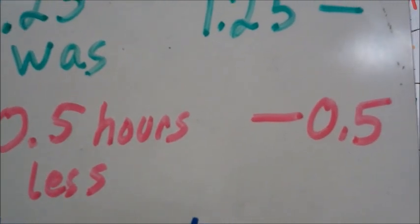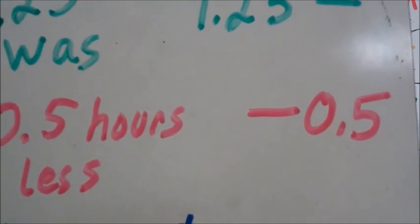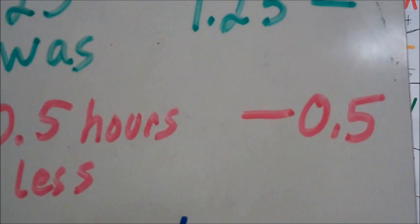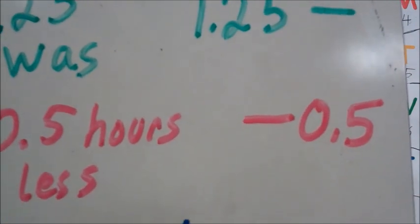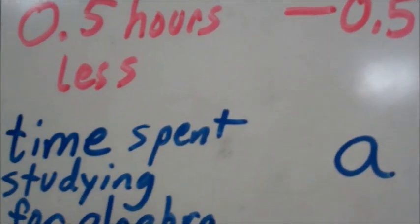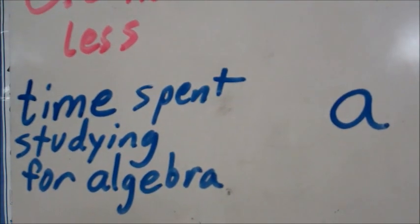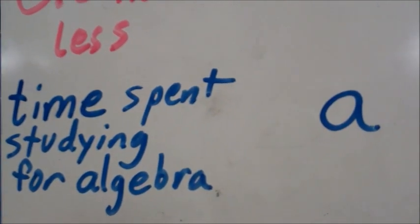Also, we have 0.5 hours less. 0.5 hours less means subtracting, or minus 0.5. Finally, we have the time spent studying for algebra, which we don't know, so we can use the variable a. You can use another variable if you'd like to.